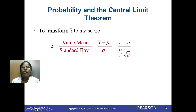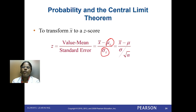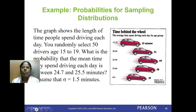Next, how to transform x-bar to a z-score. The formula is z = (x-bar − mu-x-bar) / sigma-x-bar, where mu-x-bar equals the population mean mu, and sigma-x-bar is the standard error sigma / sqrt(n). Using this we can transform the x-bar value to z and then find the probability for the sampling distribution.